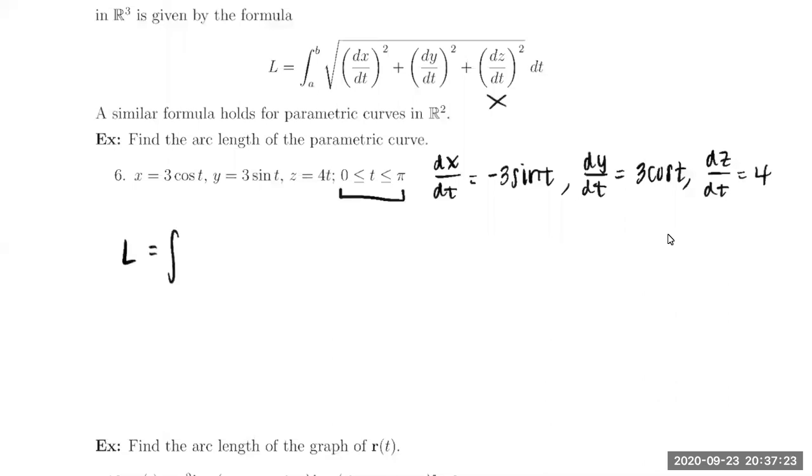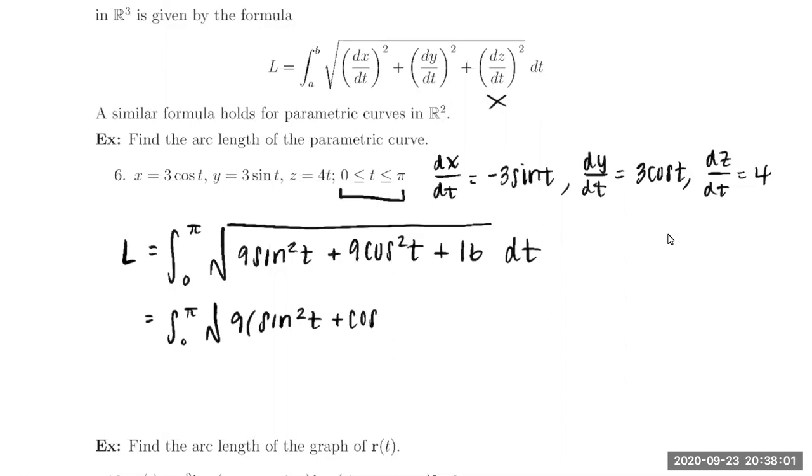And so we're now ready to set up our integral. So we're going to integrate from zero to pi. And then I want to take the square root of the sum of the derivative squared. So dx dt squared is going to be a nine sine squared t. dy dt squared is a nine cosine squared t. And dz dt squared is 16. All of this is being taken with respect to t. So if we look a little bit closer at the first two terms under the radical, I can factor a nine out and I'm left with a sine squared t plus a cosine squared t. And so we recognize that to be the Pythagorean identity that that is equal to one.